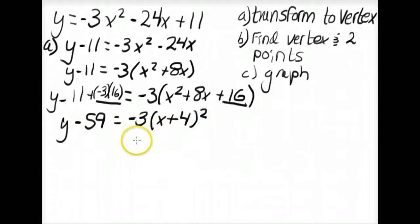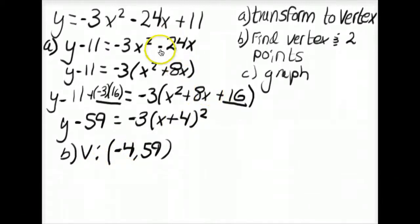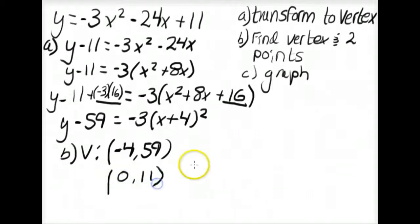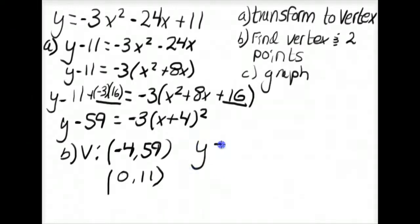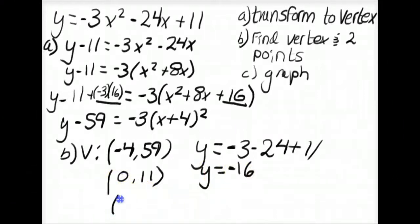Now in vertex form, the vertex is at (negative 4, 59). To find two other points: the y-intercept is easy — set x equal to 0, giving y equals 11, so the point is (0, 11). For a third point, substitute x equals 1: y equals negative 3 minus 24 plus 11 equals negative 16, giving the point (1, negative 16).